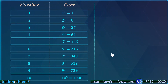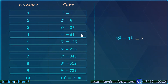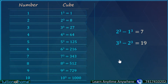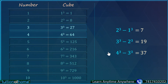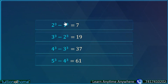Here we have taken numbers and their cubes, and let's subtract consecutive cubes. 2 cube minus 1 cube = 8 minus 1 = 7. Then 3 cube minus 2 cube = 27 minus 8 = 19. Then 4 cube minus 3 cube = 37. Next, 5 cube minus 4 cube = 61. Can you observe any pattern in 7, 19, 37, 61?